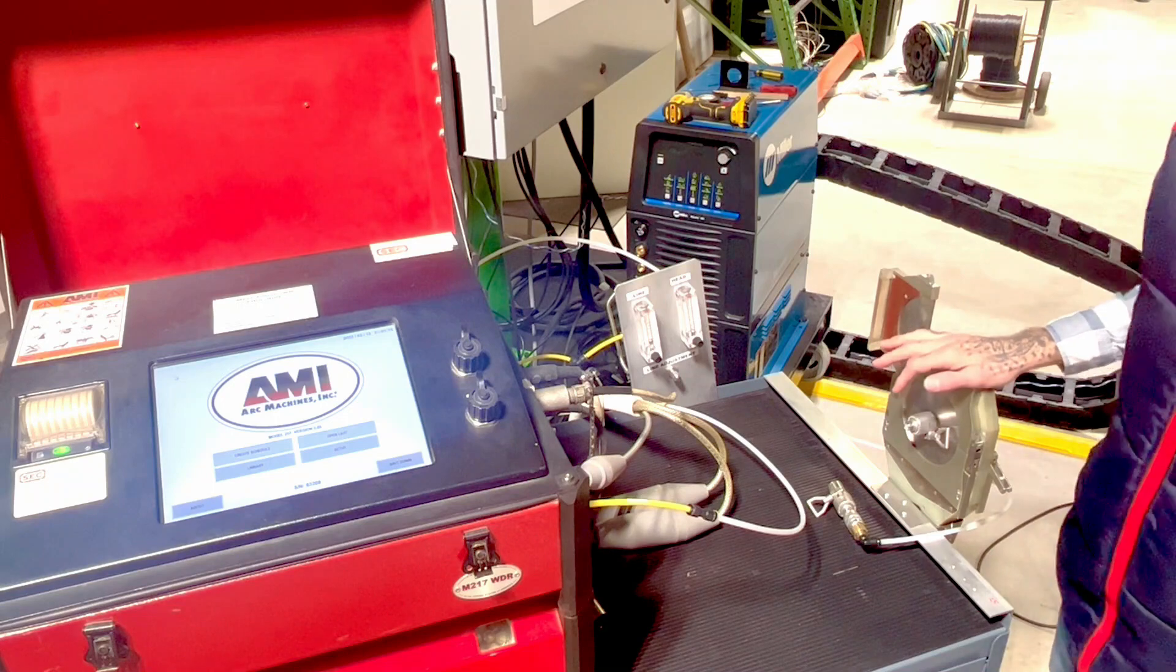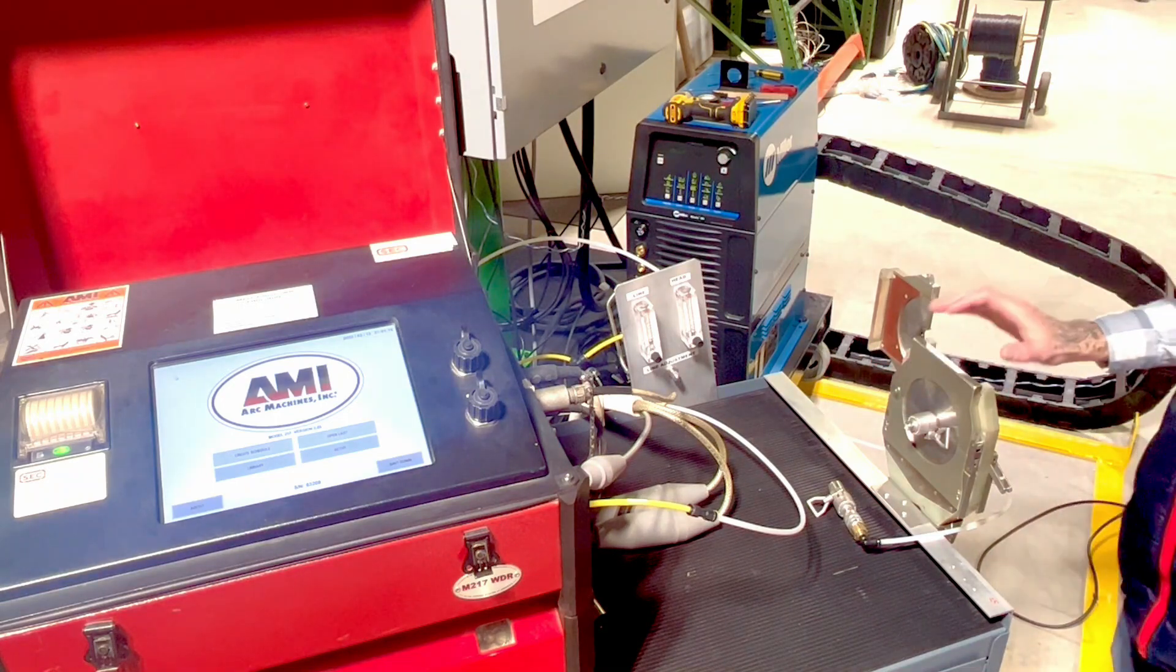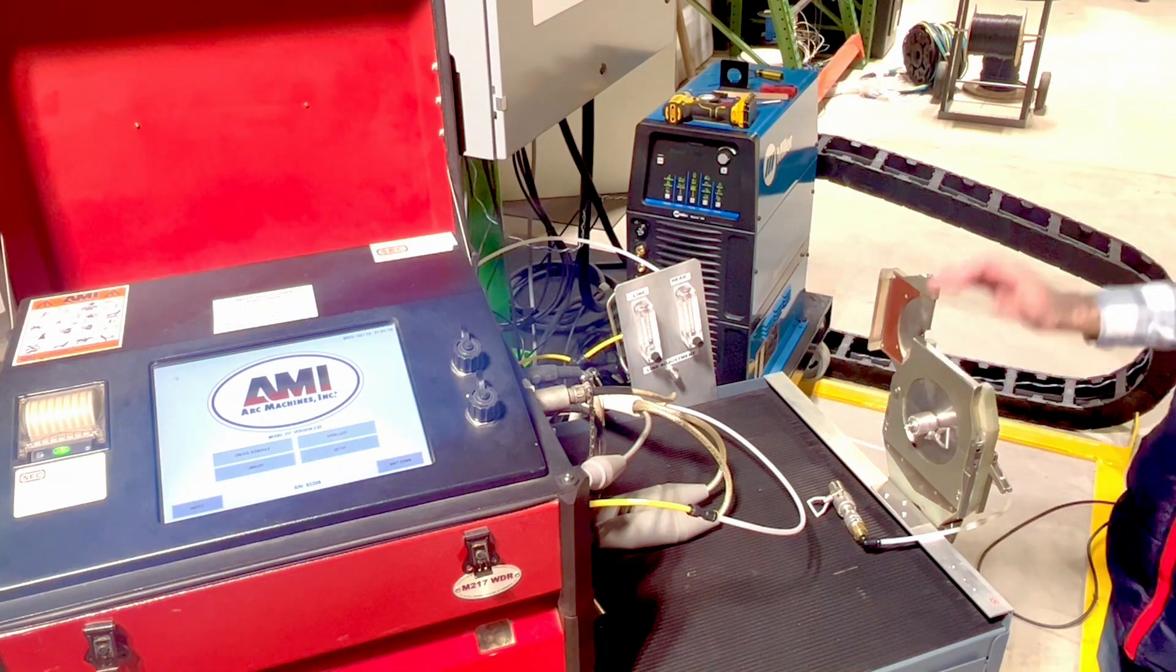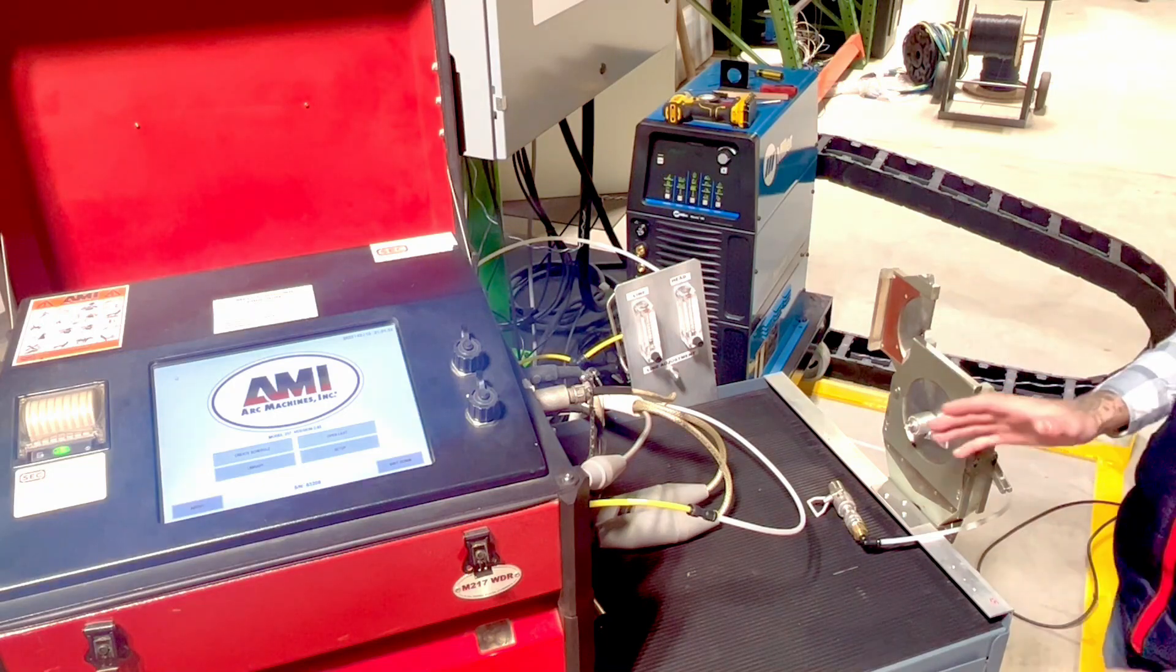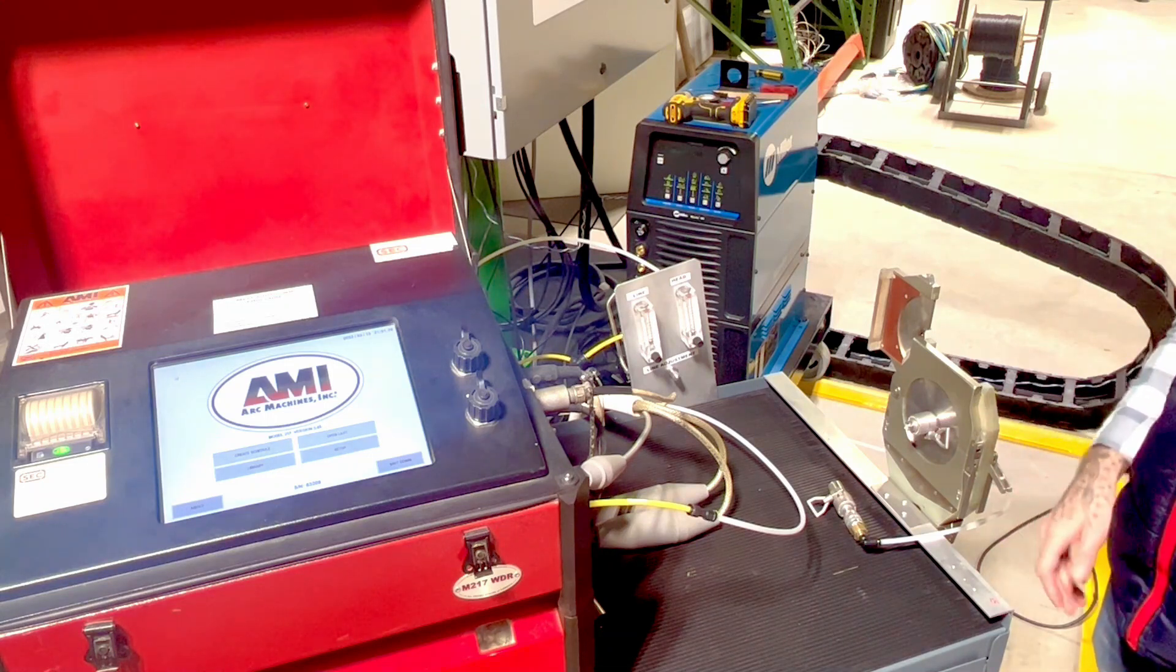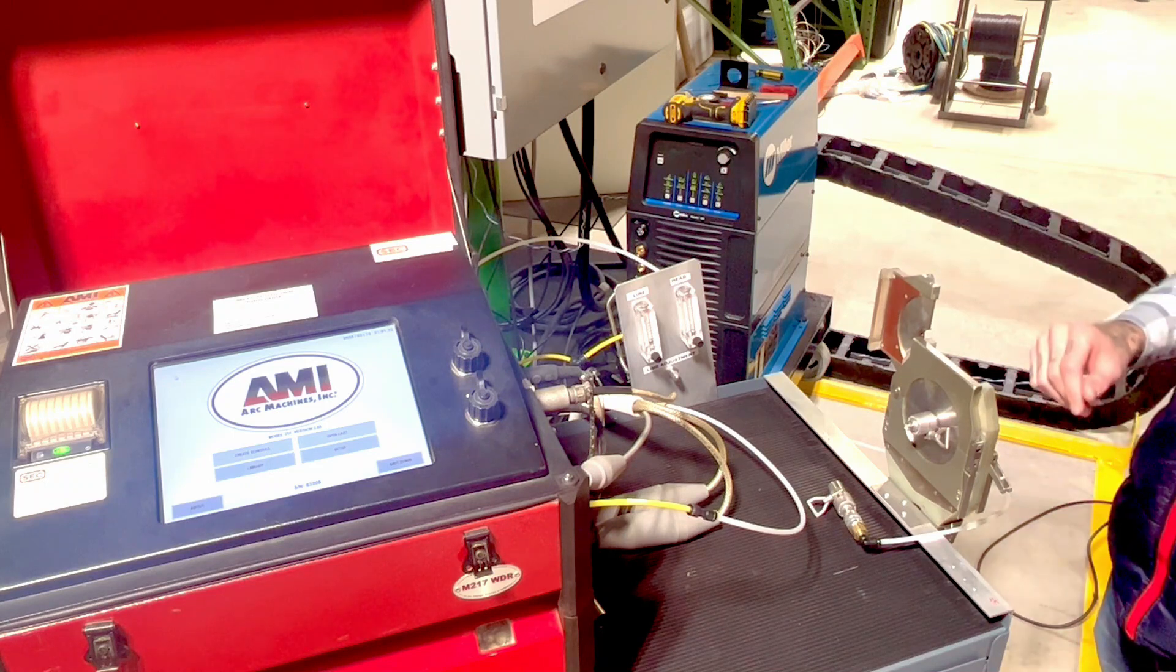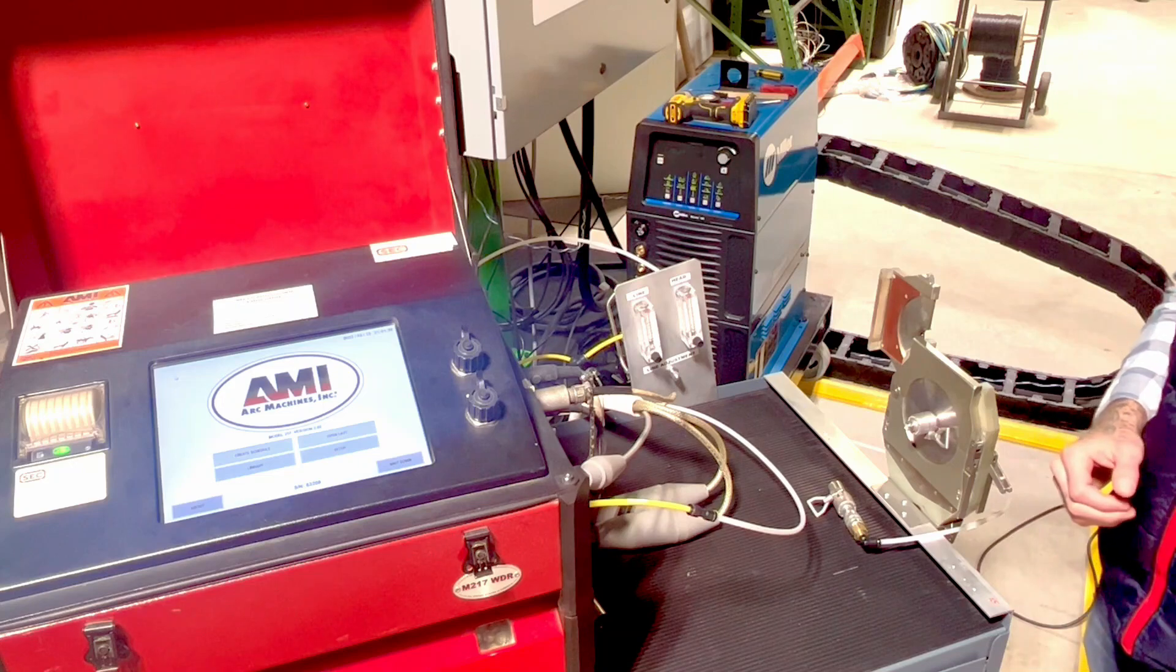Today we're going to be using the A4000 closed fusion weld head by AMI. This is our most popular weld head that we sell and rent and it welds from four inch down to three quarter inch. It's also great for limited space applications because of its thin and narrow design. A couple other features that I like about it is that it has dual clamping mechanisms and it also has a flip up window that you can check the fitment of the workpiece or check in on the weld as it's being performed.